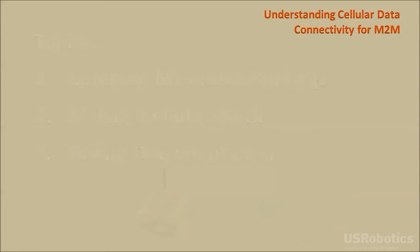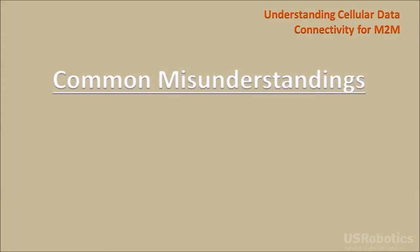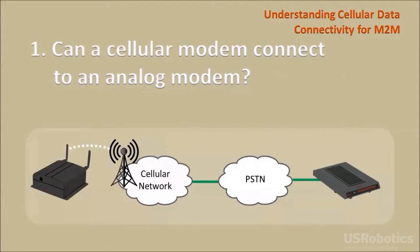There are three questions that expose the most common misunderstandings about cellular data communications. Question one: can a cellular modem connect to an analog modem? In today's cellular networks, a cellular modem cannot connect with an analog modem through the cellular network and the telephone network due to technical limitations of the networks and of the modems.